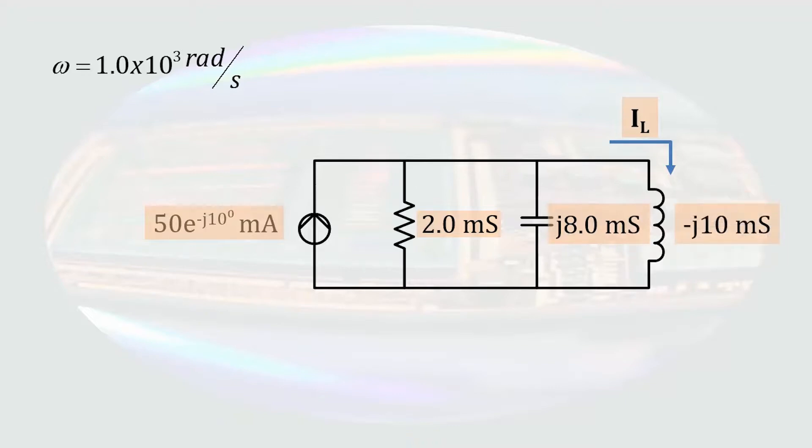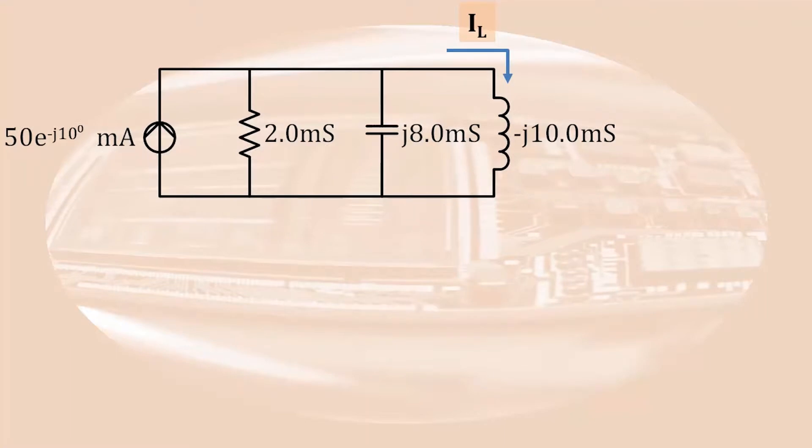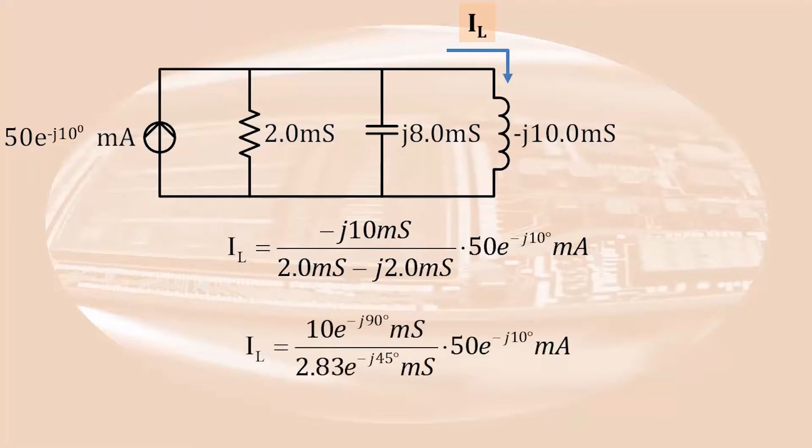The circuit is converted now to the phasor domain, and now we can use current division to determine the current through the inductor. To determine the current through an admittance, when several admittances are in parallel with a known current, we take the admittance we are interested in, divided by the sum of admittances in parallel, and multiply by the known current. If we do the arithmetic in the denominator, we have a ratio of admittances times the current.